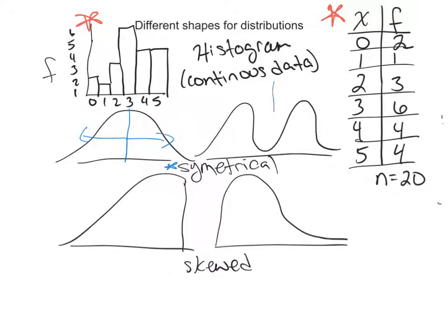Same thing here. If you draw a line right down the middle, this side looks like this side versus a skewed. These are both symmetrical. This one is unimodal, and this one is what we consider bimodal or it has two modes.